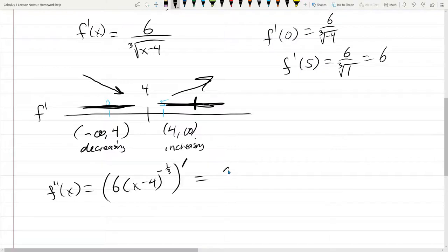Now we're taking derivative, 6 times the power, negative 1 third, x minus 4. Subtracting 1 from the power is negative 4 thirds. We can reduce 6 times negative 1 third, negative 2, divided by x minus 4. It's the cube root, then the fourth power.